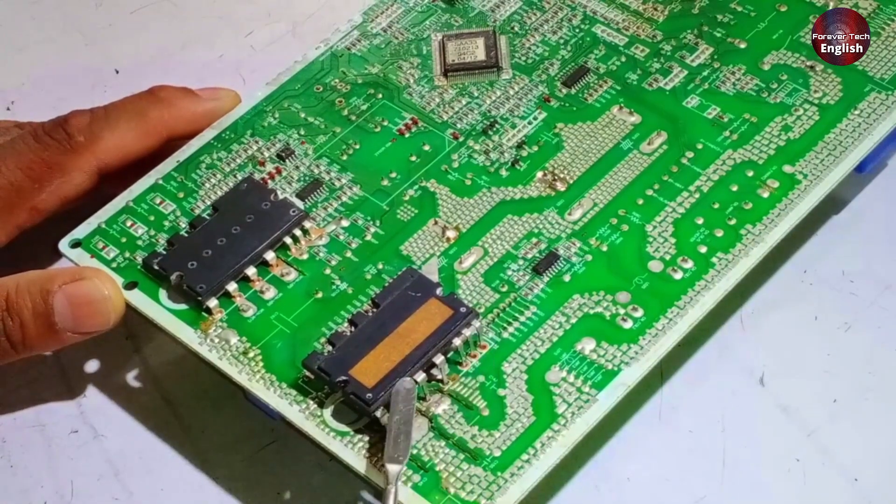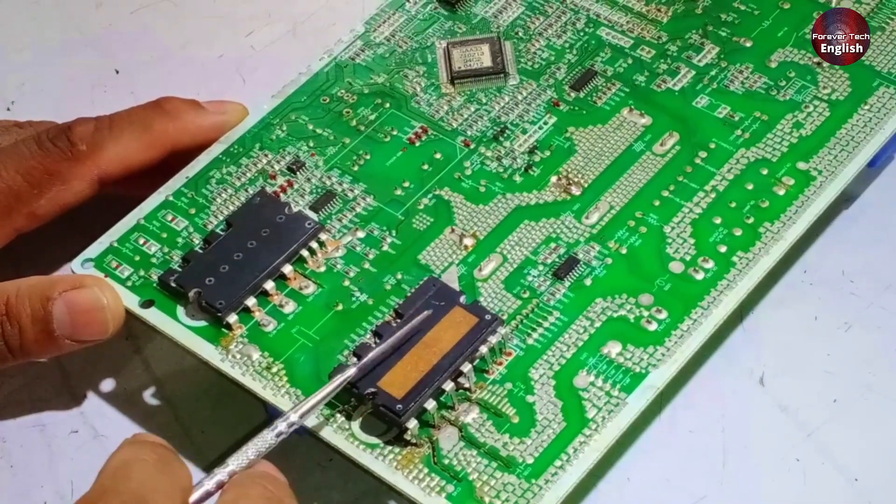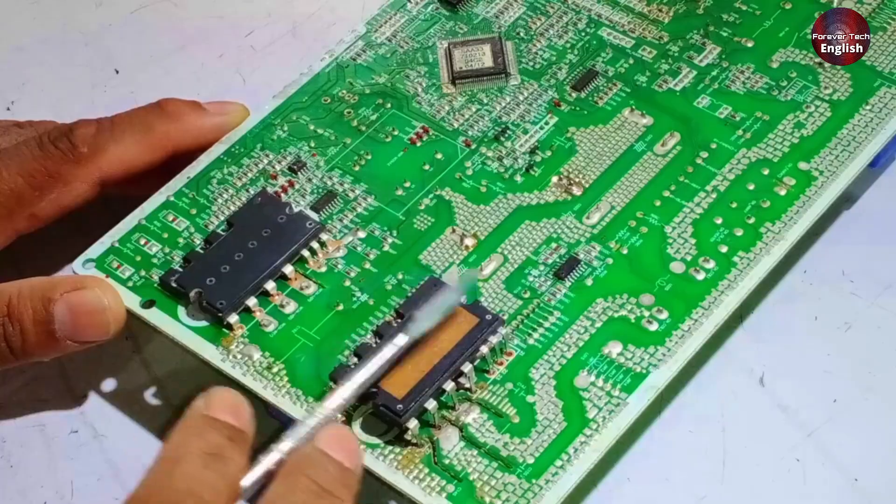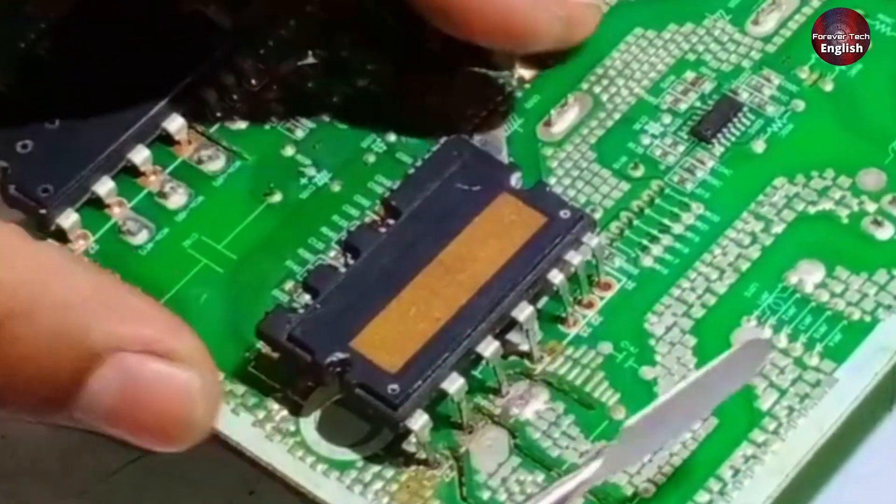The first difference is in the pins, where we supply power and where we receive it. The second difference is that the high side and low side of this module are entirely separate. Here, the low side is separate, and the high side is also separate.